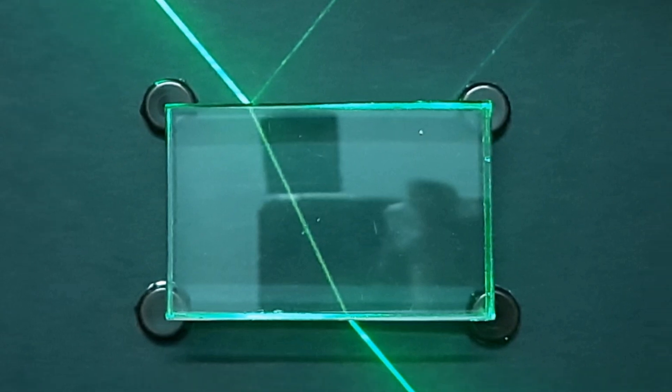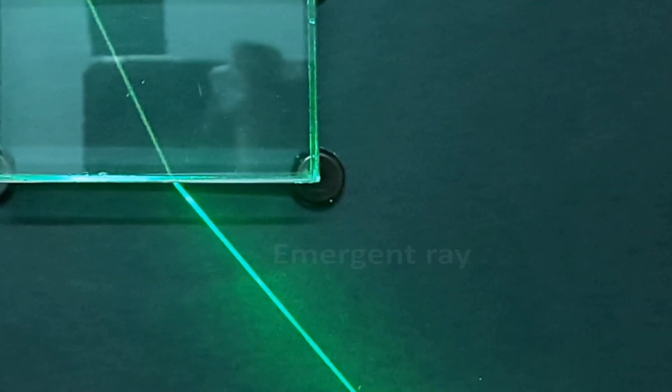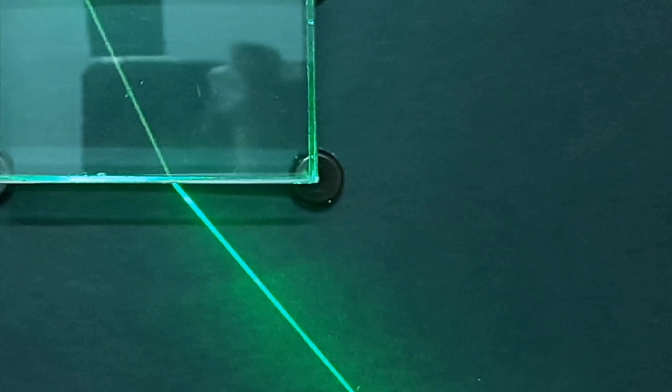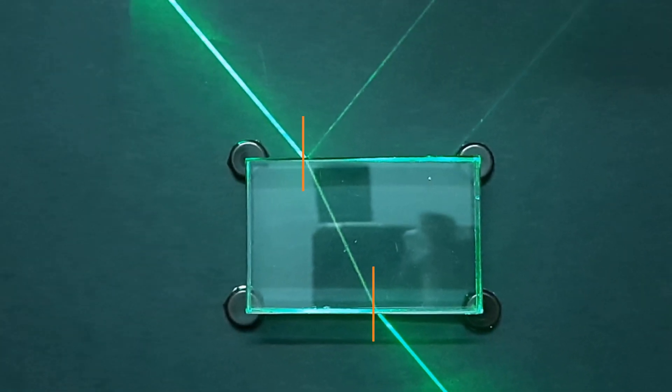The ray that comes out of the glass slab is known as emergent ray. A line perpendicular to the glass slab at the point of incidence is called the normal.